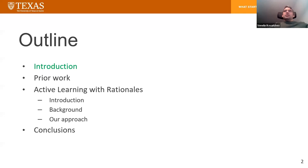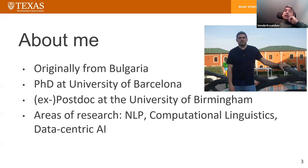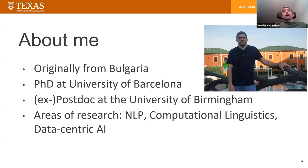This is the general outline. I will have a brief introduction, talk a little bit about my prior work, and then focus on one specific project that we're currently developing at UT: active learning with rationals. I am originally from Bulgaria, a small Eastern European country. I did my PhD at the University of Barcelona, working on computational semantics and textual meaning relations. Then I did a short postdoc at the University of Birmingham, working on automatic scoring of theory of mind. My areas of research are natural language processing, computational linguistics, and data-centric AI.